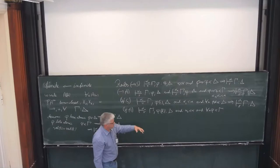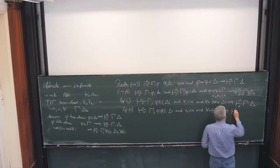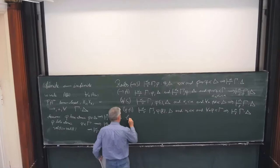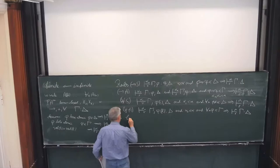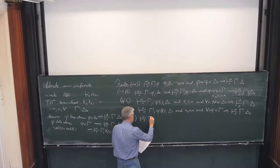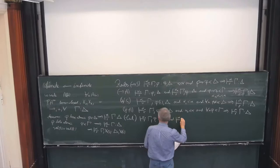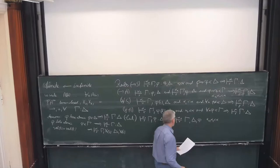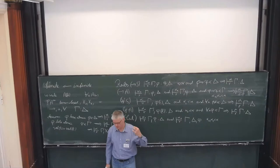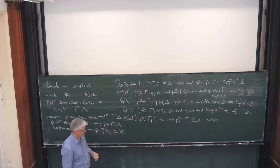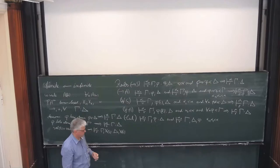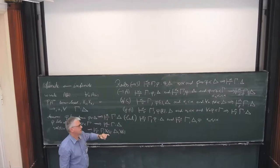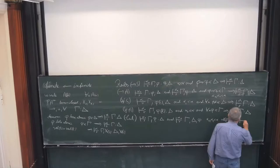The universal introduction in the antecedent comes down to an existential introduction. If I have phi(k) and the formula for all x, phi(x) is in gamma, then this is an antecedent formula, giving alpha, r, gamma, delta. And then we have the so-called cut rule. We have alpha_0, r, gamma, phi, delta and alpha_1, r, gamma, delta, phi with alpha_0, alpha_1 less than alpha. The role of R is to bound the logical complexity of the cut formula phi.